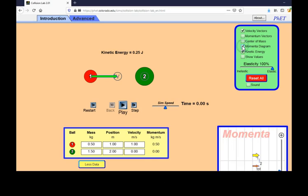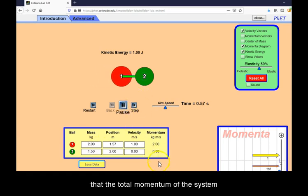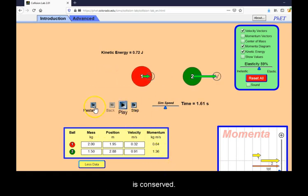You can also use the momentum diagram to see the vector sum of the momentum. As we simulate collisions of any kind, notice that the total momentum of the system is conserved.